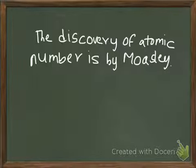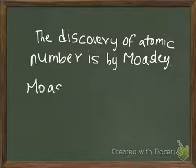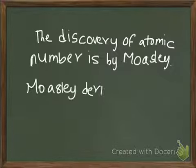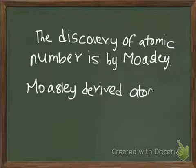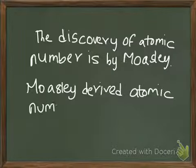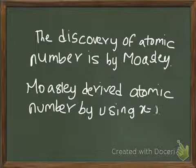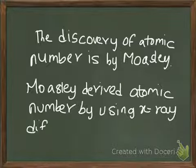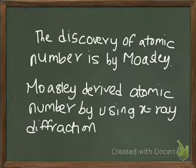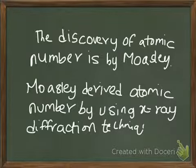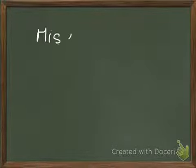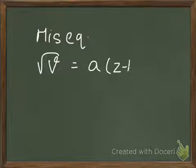The discovery of atomic number is by Moseley. So, how did he discover atomic number? Moseley, his equation equals root v equals a times z minus b.